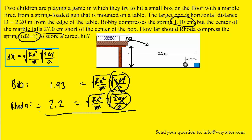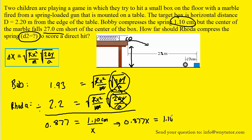So we go ahead and divide the two equations. At this point it's just a little more algebra — basically cross multiply. You'll have 0.877x equal to 1.10 centimeters. Then divide both sides by 0.877, and you can solve for x. You end up with 1.25 centimeters, which is the distance that Rhoda must compress her spring in order to hit the target.